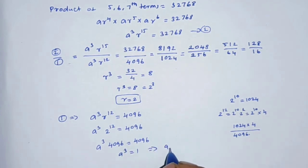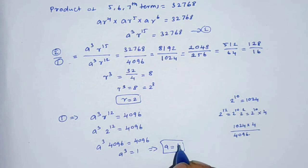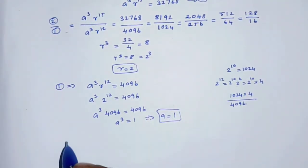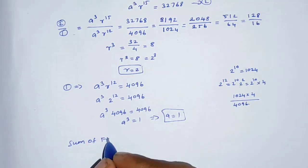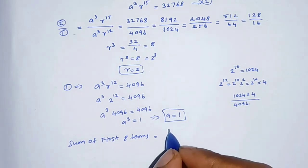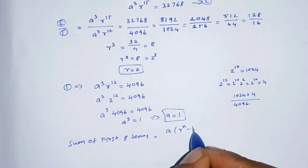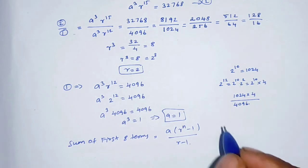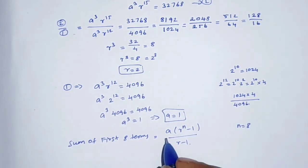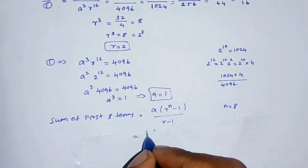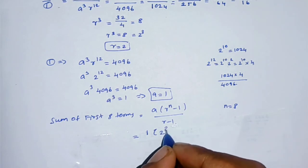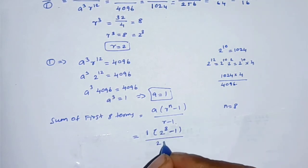Cancelling 4096 from both sides gives a³ = 1, therefore a = 1. Now for the sum of the first 8 terms, using the formula S = a(r^n - 1)/(r - 1), with n = 8, a = 1, and r = 2.